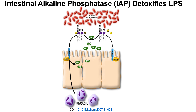When LPS is intact, it binds to its receptor — the Toll-like receptor, TLR — on intestinal epithelial cells and any other cell type, signaling a pro-inflammatory cascade. In contrast, when IAP dephosphorylates LPS, it detoxifies it, and LPS can no longer bind to TLR to stimulate that pro-inflammatory cascade. IAP is therefore potentially good for reducing inflammation.